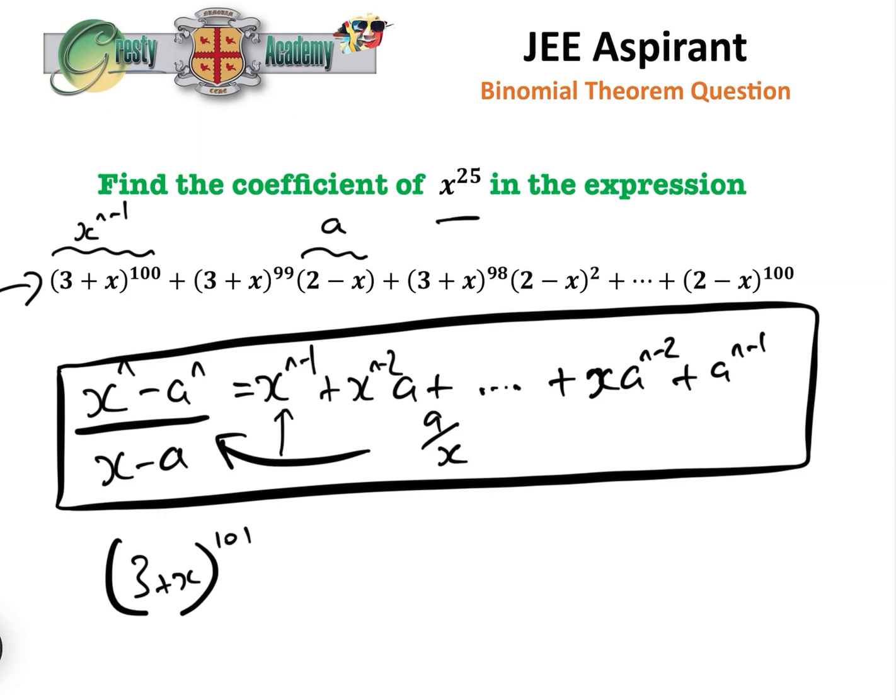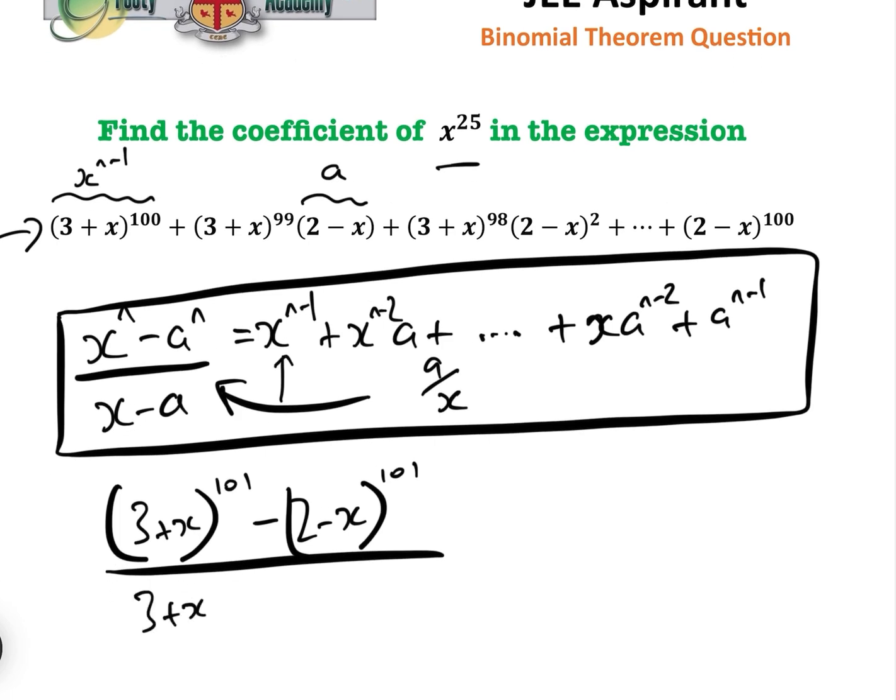As being 3 plus x to the power of 101 minus 2 minus x to the power of 101 over 3 plus x minus 2 minus x.